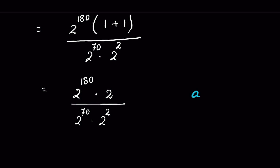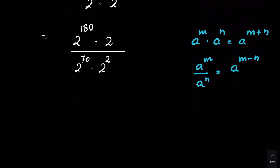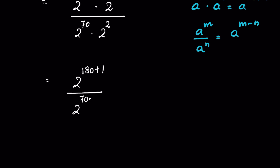There are two identities: aᵐ × aⁿ = aᵐ⁺ⁿ, and aᵐ / aⁿ = aᵐ⁻ⁿ. Using these, we get 2 to the power 180+1 upon 2 to the power 70+2, which is 2 to the power 181 minus 72, giving us 2 to the power 109.